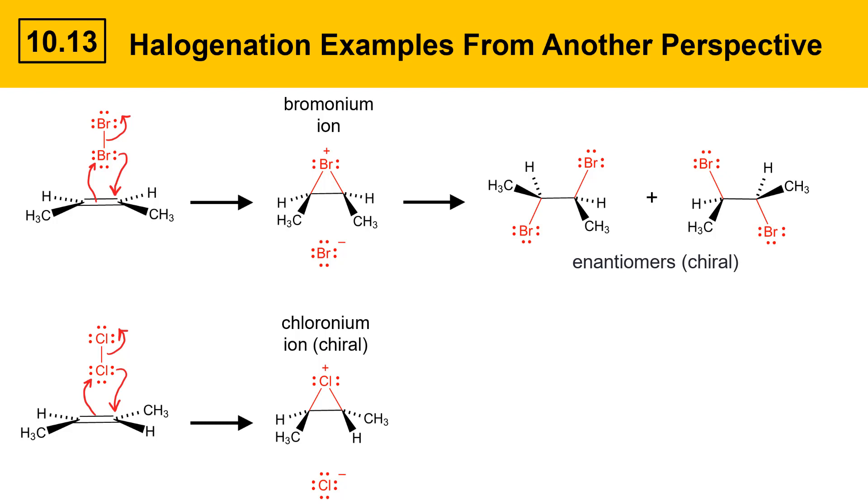If the chloronium ion is attacked by Cl- at the left carbon, I'll draw that in blue ink, that gives the following dichloride product, which is again an anti-product. The other possibility is that chloride could attack the right carbon of the chloronium ion. I'll draw that in green ink, and that gives this product on the right. In this case, the product on the left and the product on the right are identical because it's an achiral molecule. That's different than what happened above where we had a chiral product.